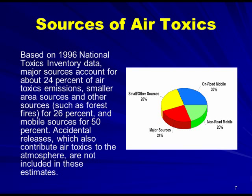This slide provides an idea of the sources of air toxics, from the 1996 National Toxics Inventory. Major stationary sources account for about 24% of air toxics emissions, smaller area sources and other sources such as forest fires for about 26%, and mobile sources for about 50%. Accidental releases, which also contribute air toxics to the atmosphere, are not included in these estimates.